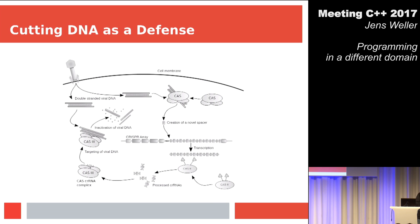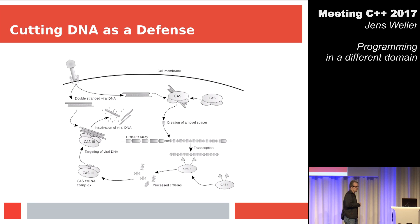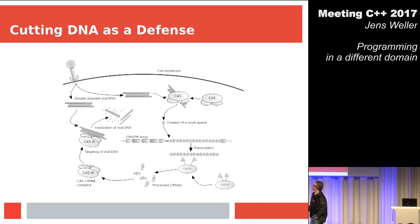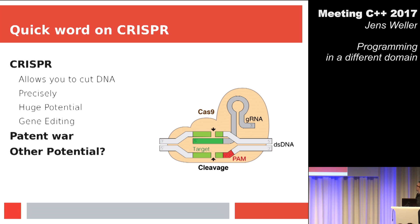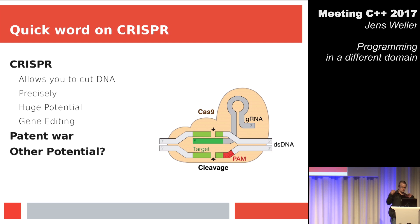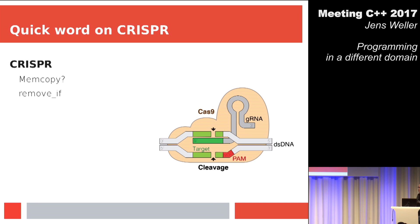A few years ago, we found something else very interesting: many bacteria have a defense mechanism against viruses which binds to certain DNA strands and cuts them. This is known as CRISPR, and it has revolutionized the field of biology and gene editing. It's very precise — you can target a certain string of DNA and cut it there. From a programmer's perspective, you can write a 'remove if' which removes something in a cell, or something like a 'memcopy.'